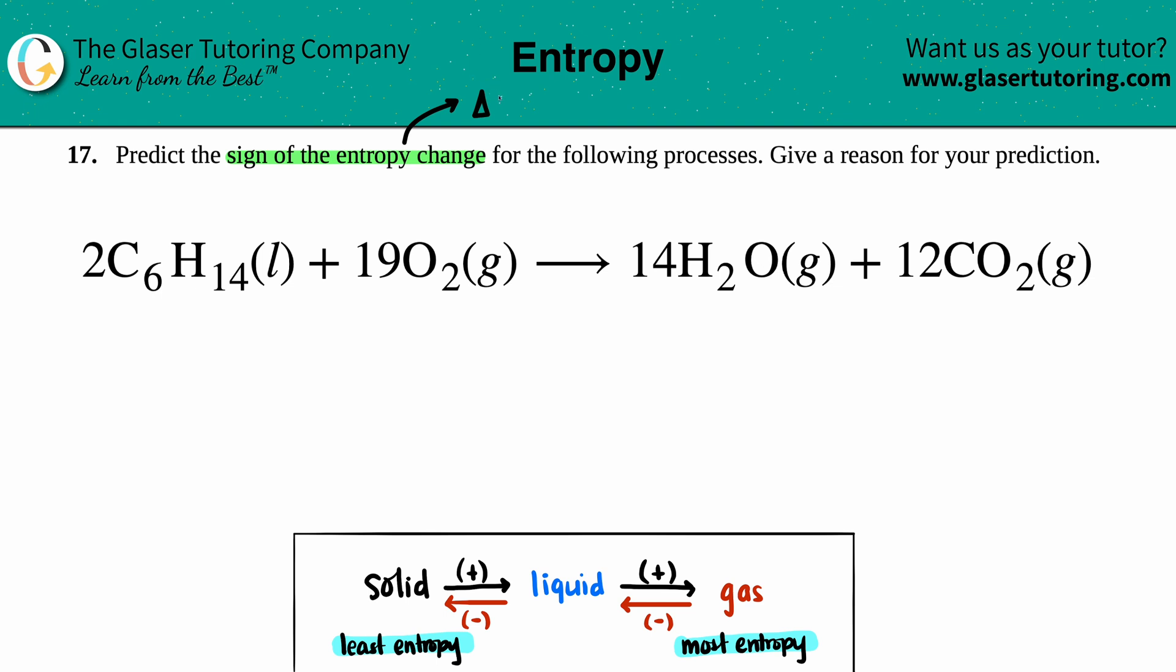gave you the answer—entropy is always an S value. So anytime you see delta S, we're talking about entropy. And remember, this is just talking about the randomness or the disorder, the chaos that's going on in a system.